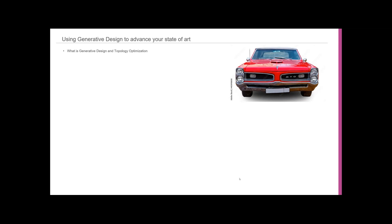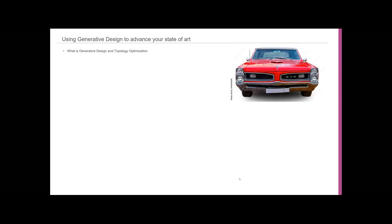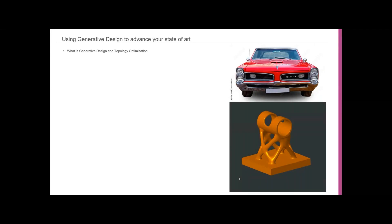So what is generative design and topology optimization? GTO was a car that my friend had — I had a Mopar in school, he had a GTO — it's actually a great name for a product. When I think of GTO now, I think of parts like this, designed by a computer. What it is not is a tool to use at the end of your design. It's something you use early in the design process, and there are some design skills required — some FEA understanding. You want to do this at the beginning when you're designing a problem, and I hope to show you some of that in the demonstrations.